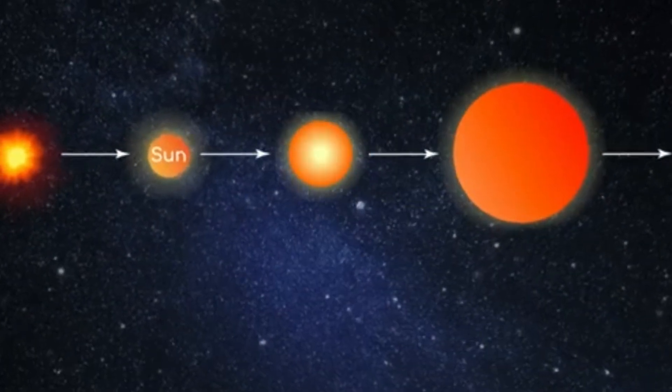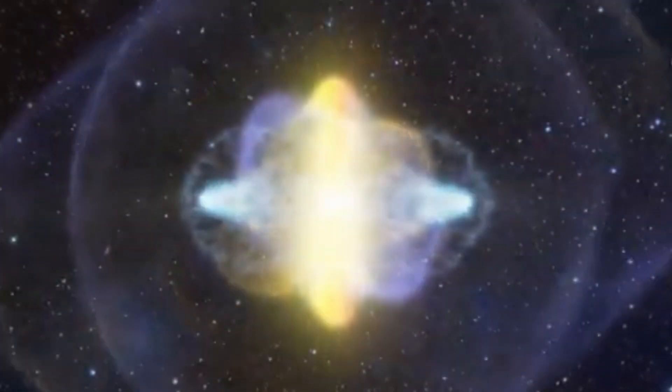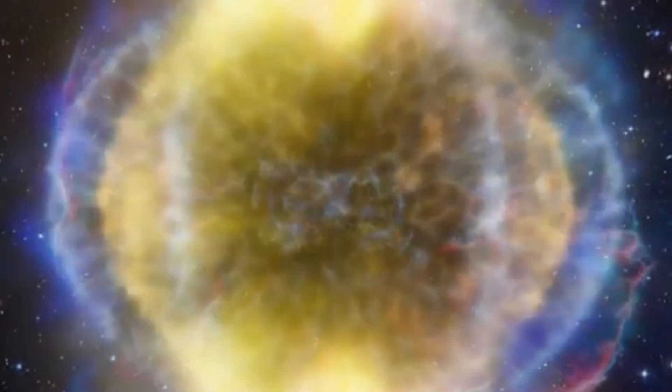However, unlike our sun, which is middle-aged at 4.6 billion years, the stars in this system have advanced much further in their life cycles. To understand why the Blaze Star system goes nova every 80 years, we first need to consider the life cycle of a typical mid-sized star like our sun.